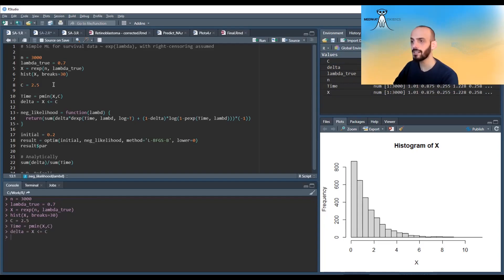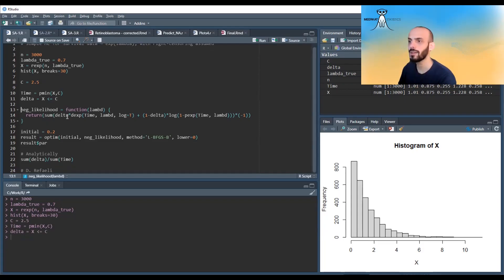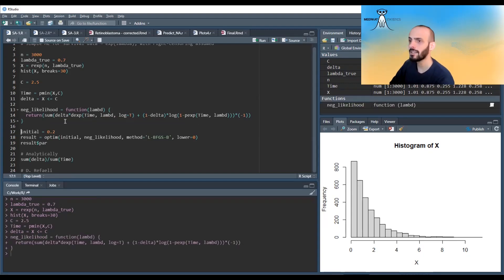Then we take the minimum of that for the time and the indicator variable for the delta. We calculate the negative likelihood - so it's basically after we take the log, it's just delta times the log of an exponential distribution here, and here it's (1 - delta) times the log of 1 minus the cdf, which is the survival function. Then I just multiply it all by minus 1 because the optimization minimizes instead of maximizes. We do this and then we give it some initial parameter to start from.